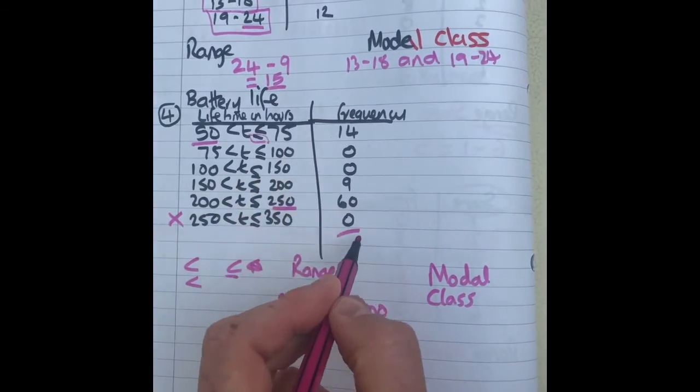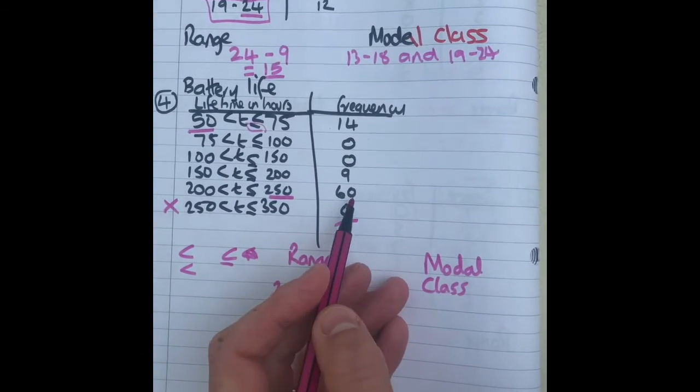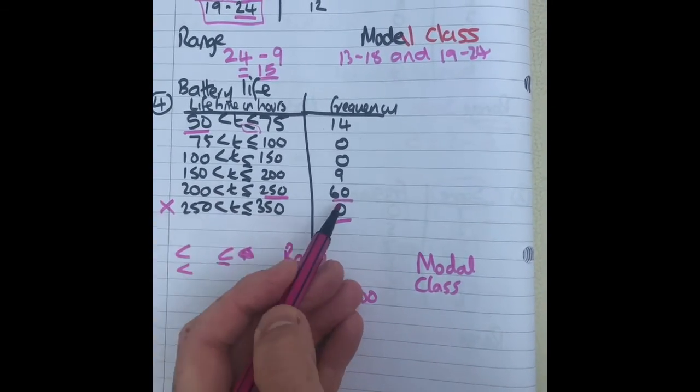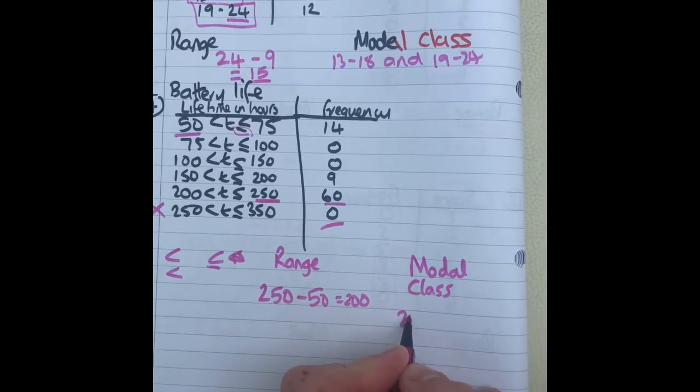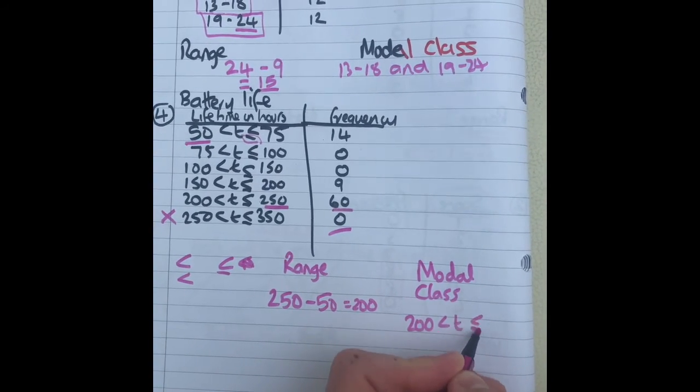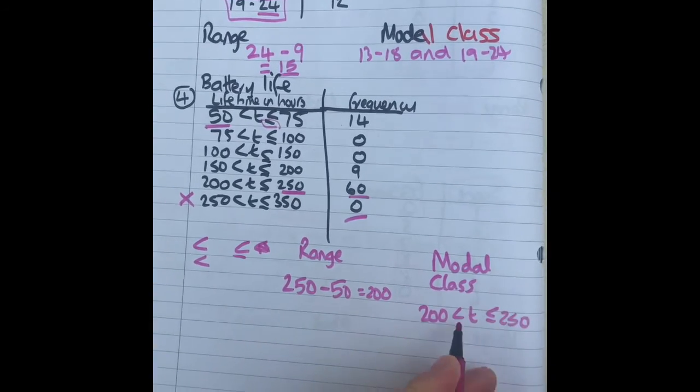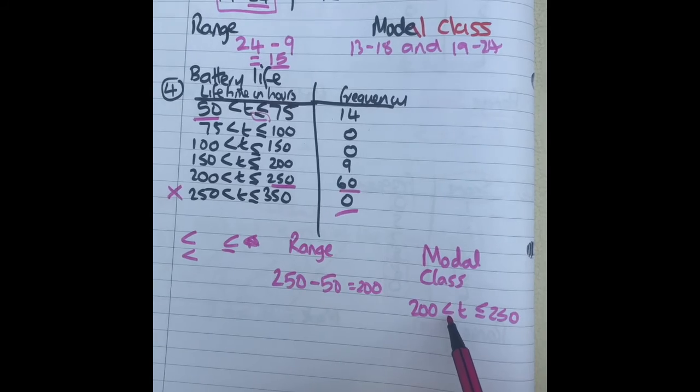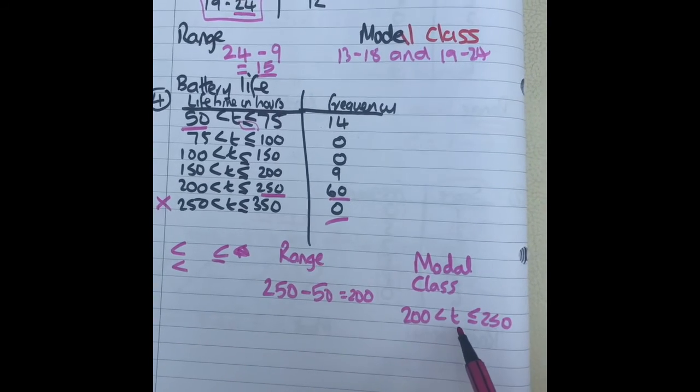Modal class, which one has got the highest frequency or the most in it? Well this one, it's 60, that group has got 60 in it. So the modal class is 200 < t ≤ 250. Make sure you write it out exactly as it is there so the inequality is in the right place.